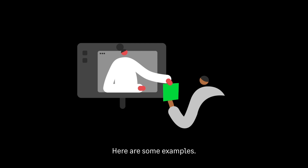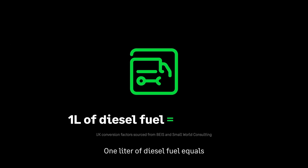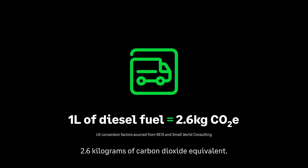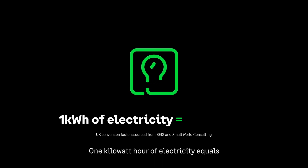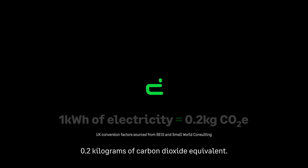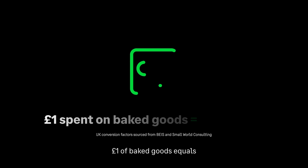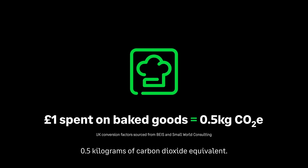Here are some examples: one liter of diesel fuel equals 2.6 kilograms of carbon dioxide equivalent; one kilowatt hour of electricity equals 0.2 kilograms of carbon dioxide equivalent; one pound of baked goods equals 0.5 kilograms of carbon dioxide equivalent.